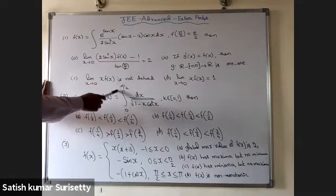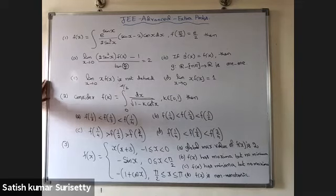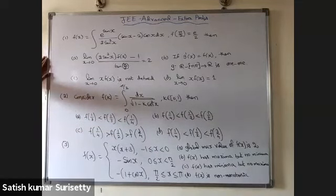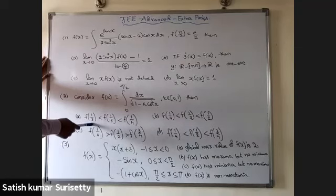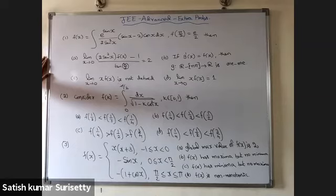Second problem: f(k) = integral from 0 to π/2 of dx / √(1 − k cos²x), where k belongs to [0, 1). Identify the correct option. First option: f(1/2) < f(1/3) < f(1/4). Second option: f(1/4) < f(1/3) < f(1/2).